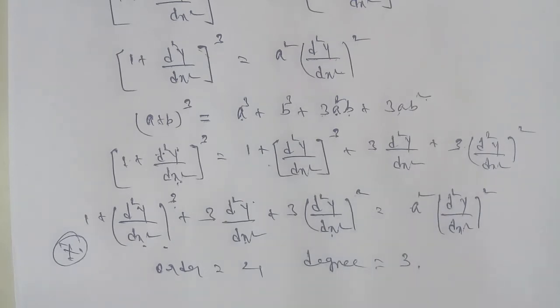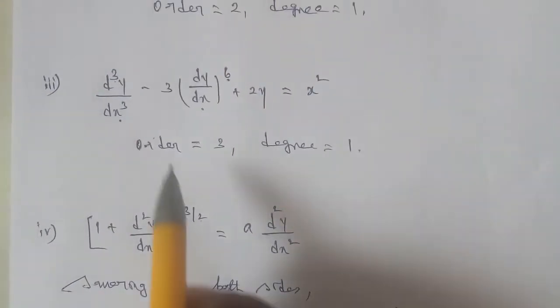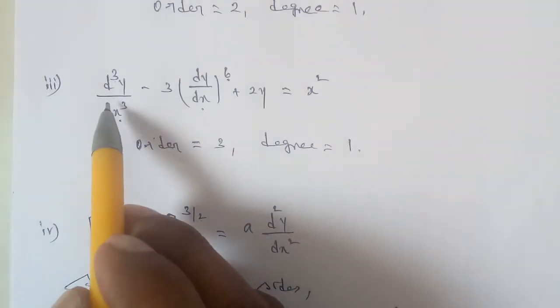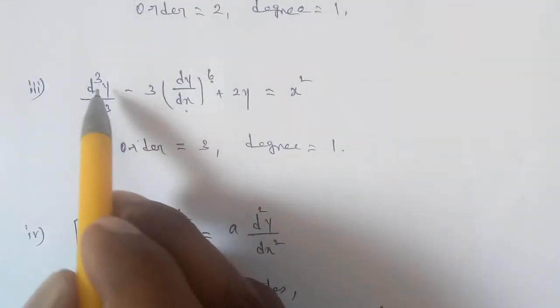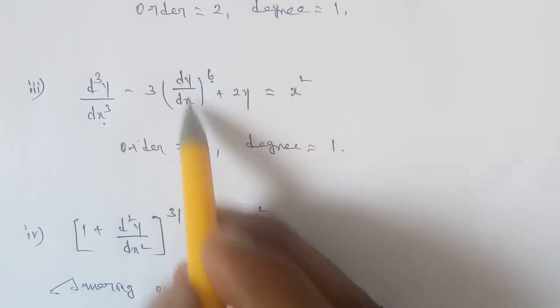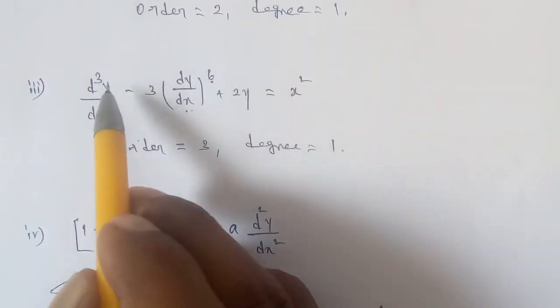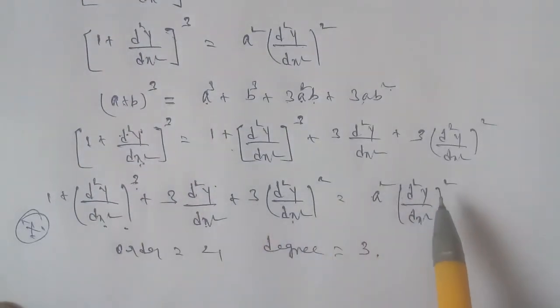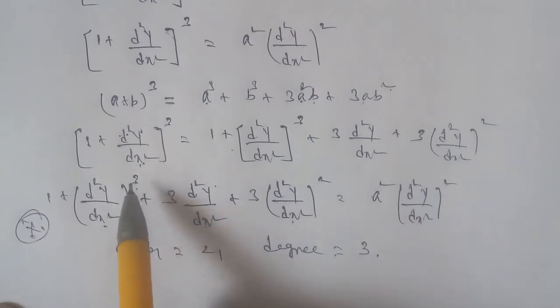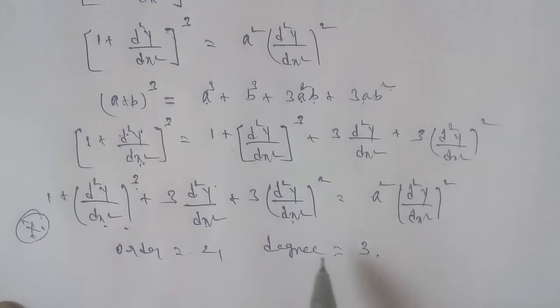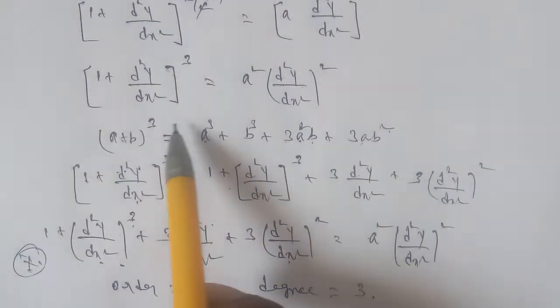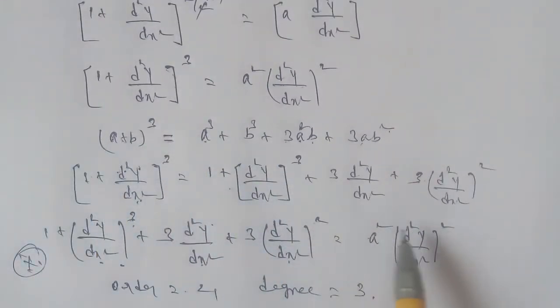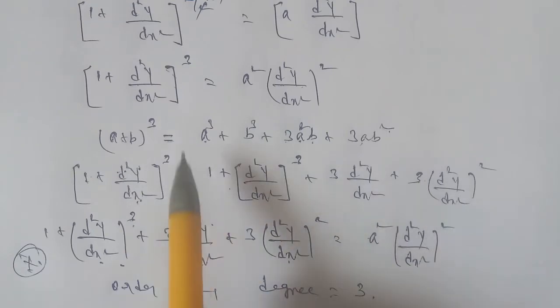To summarize sub-question 4: after removing the fractional power by squaring both sides and expanding, the order is 2 and the degree is 3, since the highest power of the highest order derivative d²y/dx² is 3.